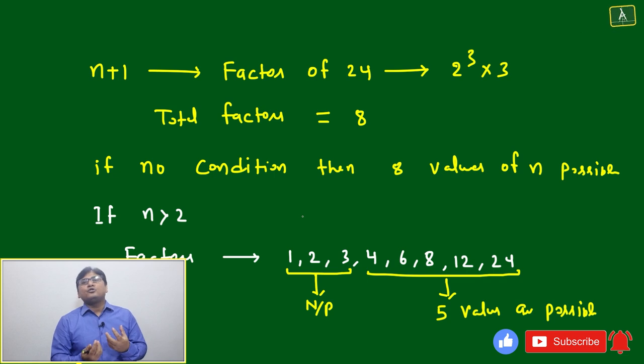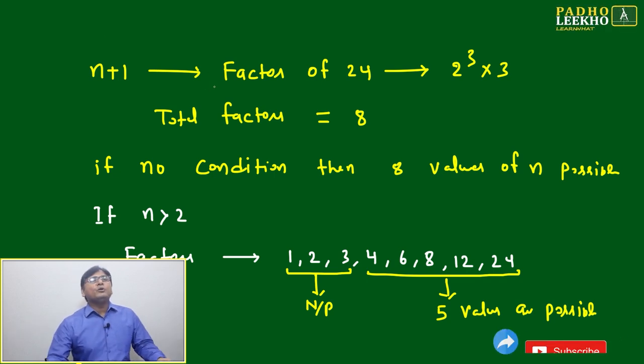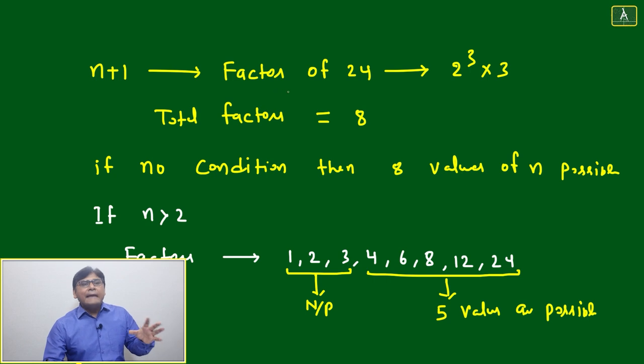n+1 will be equal to a factor of 24. n+1 can be a factor of 24, then only it will be an integer. If n+1 is not a factor of 24, like if n equals 22, then 24 divided by 23 will not be an integer. Then your new average, 65 plus 24 by n+1, cannot be an integer. But the condition is given that your new average should be an integer. So n+1 should be a factor of 24.